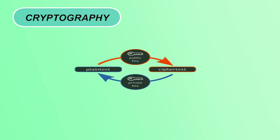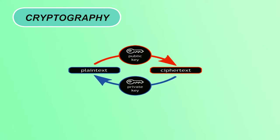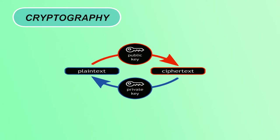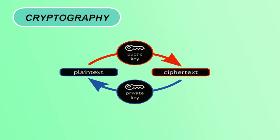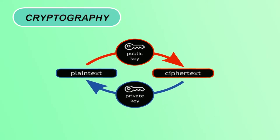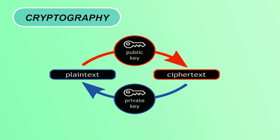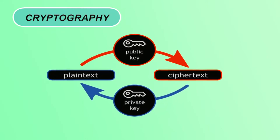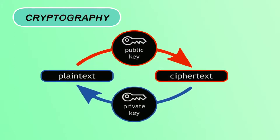In this figure you can see some terms like plaintext, ciphertext, public key and private key. The original message which we are trying to convert to non-readable form to prevent it from attackers is called plaintext, and the converted form of message is known as ciphertext. We can perform this process with the help of a key.